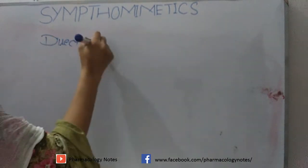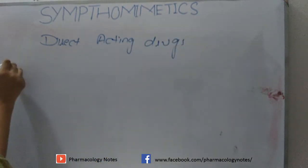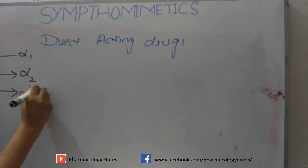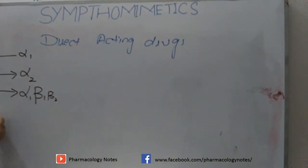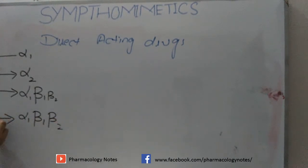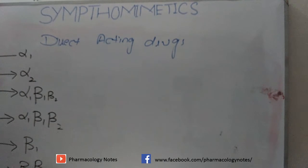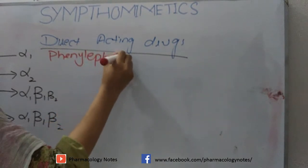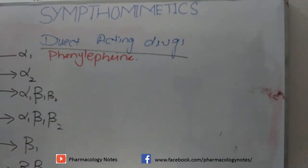We will study direct acting drugs first, classifying them according to the receptors they act on. Direct acting drugs can act on: alpha-1 only; alpha-2 only; alpha-1, beta-1 and slightly beta-2; equally on alpha-1, beta-1, and beta-2; specifically beta-1; or beta-1 and beta-2. The example of a drug acting on alpha-1 receptors is phenylephrine. Drugs acting on alpha-2 receptors are clonidine and alpha-methyldopa.